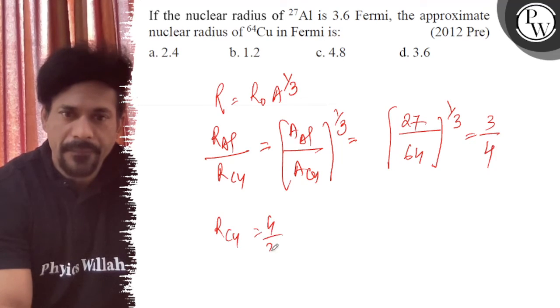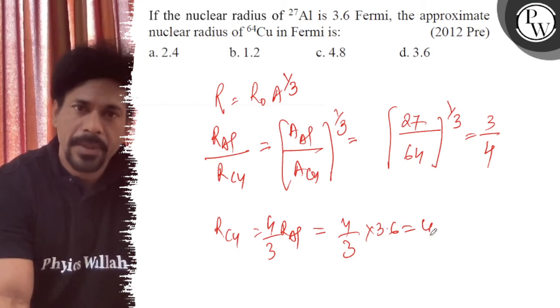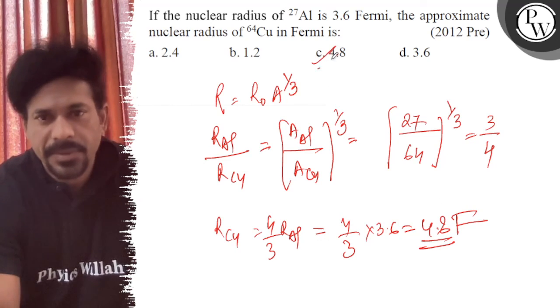It implies that R of copper equals 4/3 times R of aluminum, which is 3.6, so we get 4.8 fermi. That is option C. All the best.